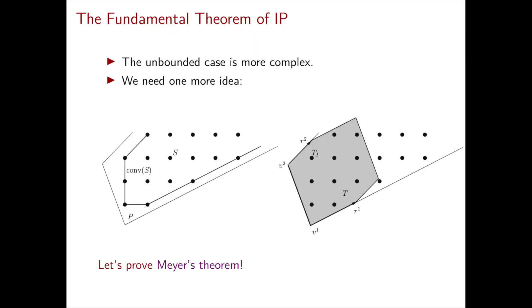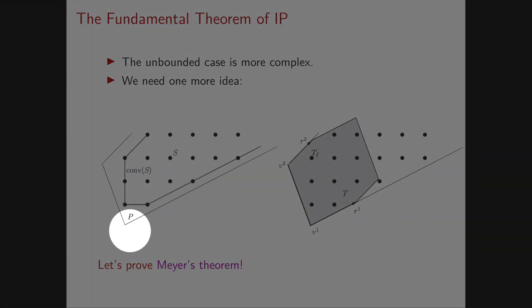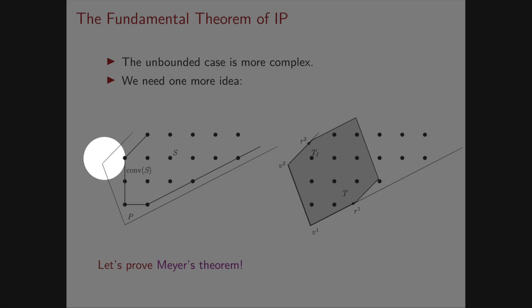The general case of Meyer's theorem is surely more complicated. What we have to do is think about where the vertices of the convex hull of S are. In general, P is described by Minkowski-Weyl as a convex combination of its vertices — say these two here — plus a conic combination of its rays — these two here. The convex hull of the vertices of P doesn't necessarily contain all the vertices of the convex hull of S; in fact in this case it contains none of them.